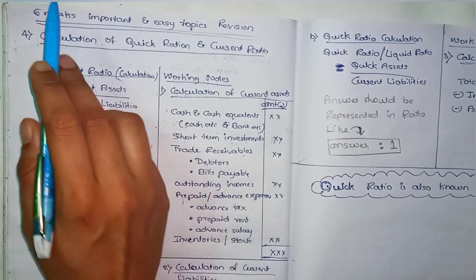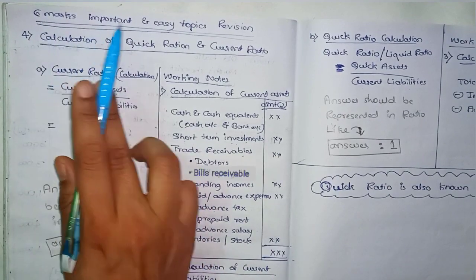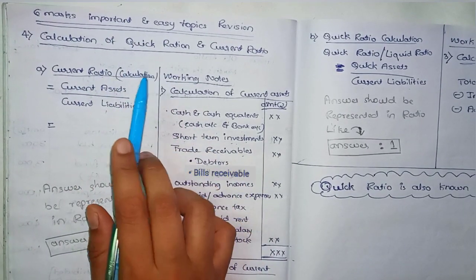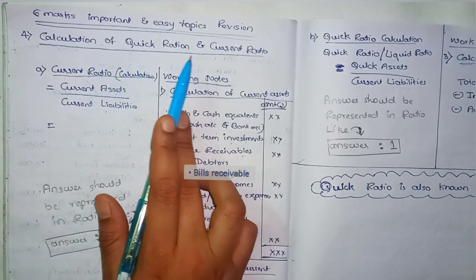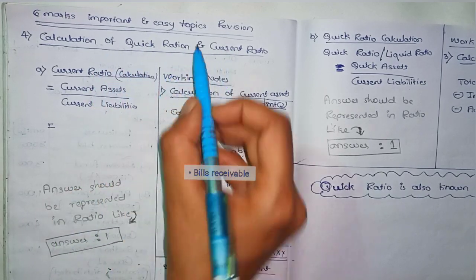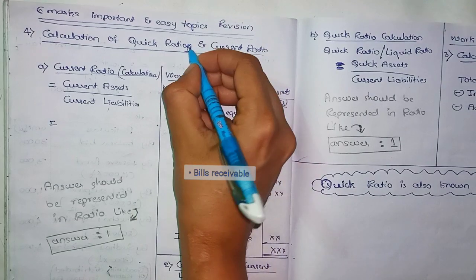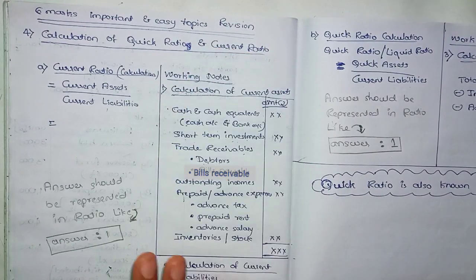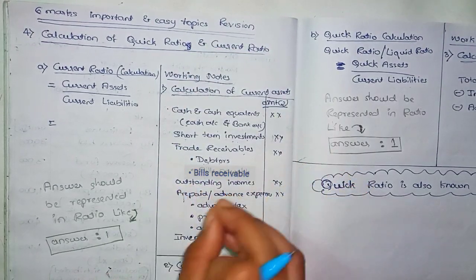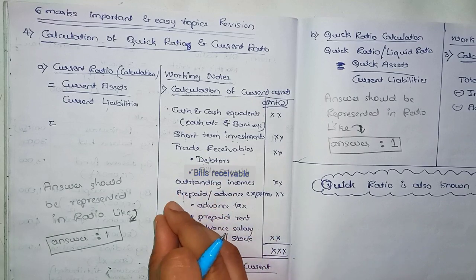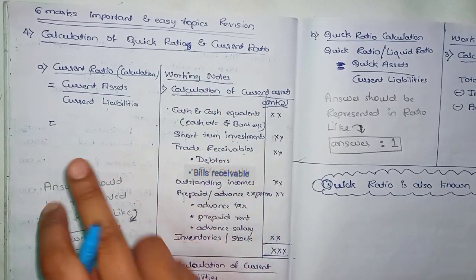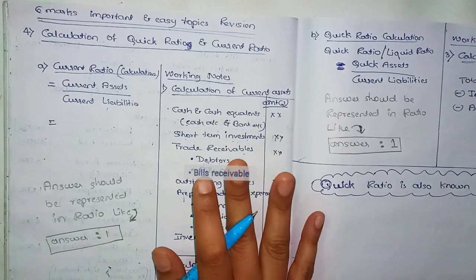Hello students. I am going to revise this important and easy topic — liquidity ratios, quick ratio and current ratio. This is a very simple and easy topic. In this chapter, we are going to read about 2 ratios worth 6 marks.